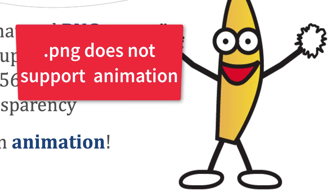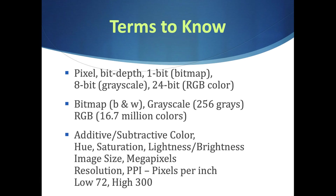That's our intro to digital data and pixels. Terms to know: pixel, bit depth — bitmap (1-bit), grayscale (8-bit, 256 shades), and RGB (24-bit, 16.7 million colors). Additive color is RGB on your monitor; subtractive color is like paint. Hue, saturation, and lightness is how you mix colors. Image size is the physical size in inches or pixels. Megapixels is millions of pixels. Resolution is pixels per inch — 72 for screen, 300 for print.